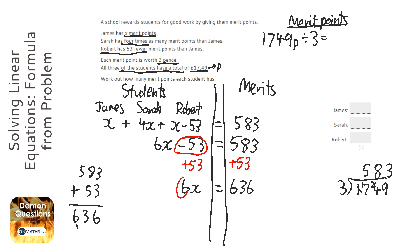And to get rid of the x here, that's a times x, so I need to divide both sides by x.